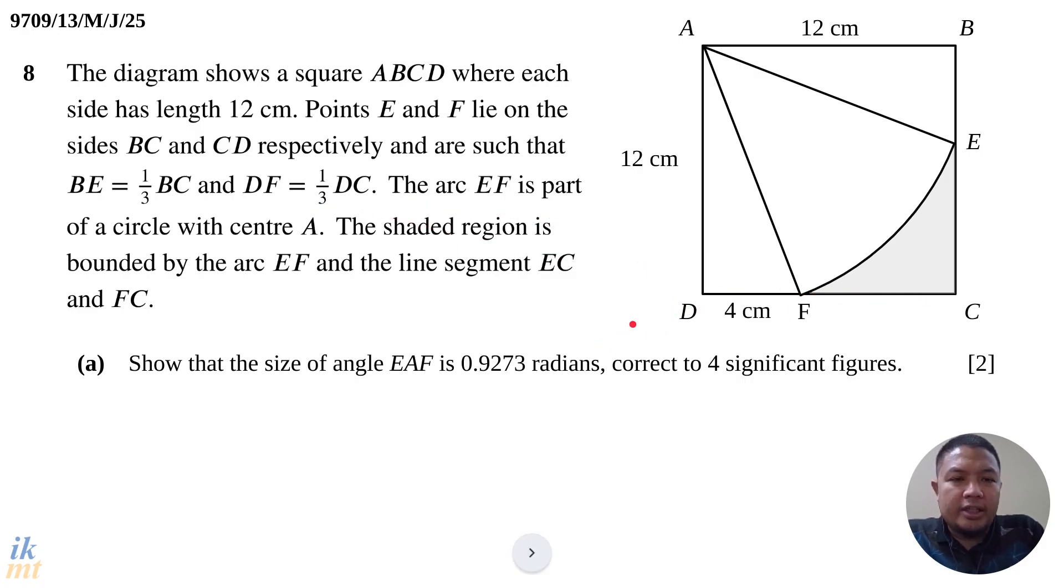So we know that the length of BE is 4 cm and the length of DF is 4 cm as well. You should label as such whenever you have a problem like this where additional information is given that is not readily available in the diagram. You should add it to the diagram so that you can see better what you're working with.